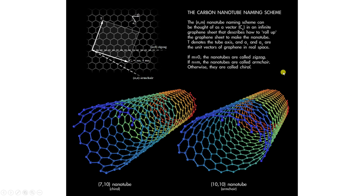There are three different kinds of nanotubes available. One is zigzag nanotube, second one is armchair nanotube, third one is chiral nanotubes. If m equal to 0, the nanotubes are called zigzag nanotubes. If n equal to m, then nanotubes are called armchair nanotubes. Otherwise they are called chiral nanotubes.